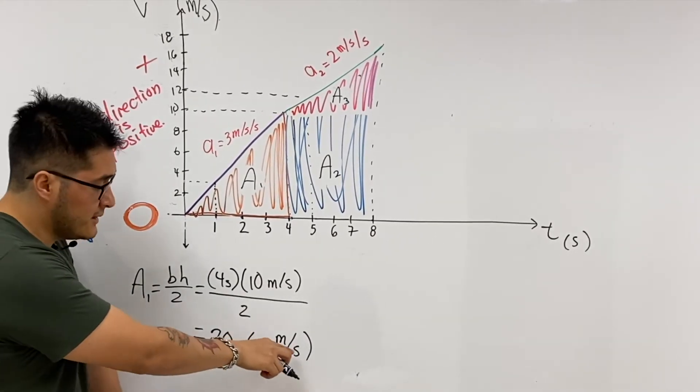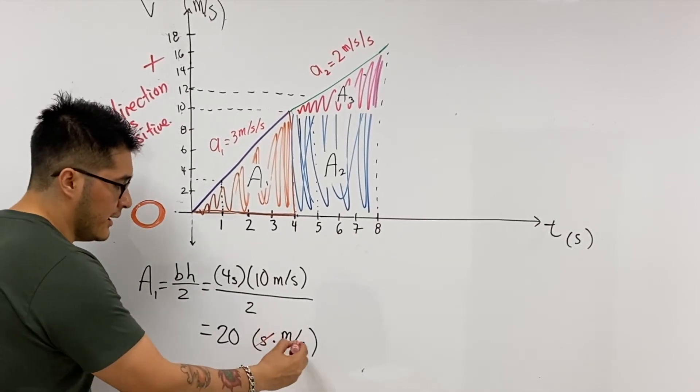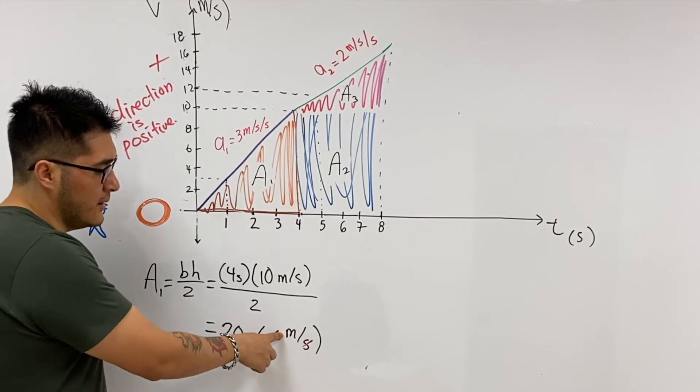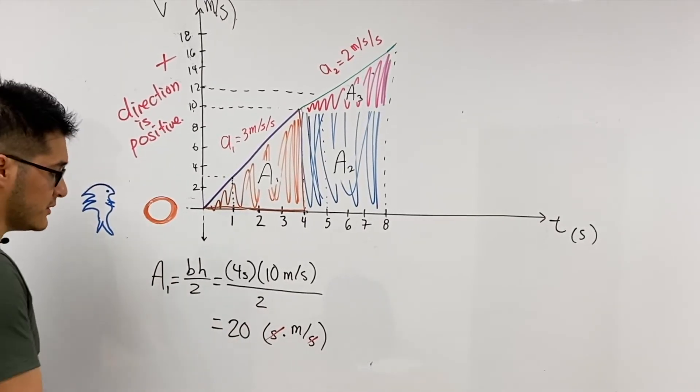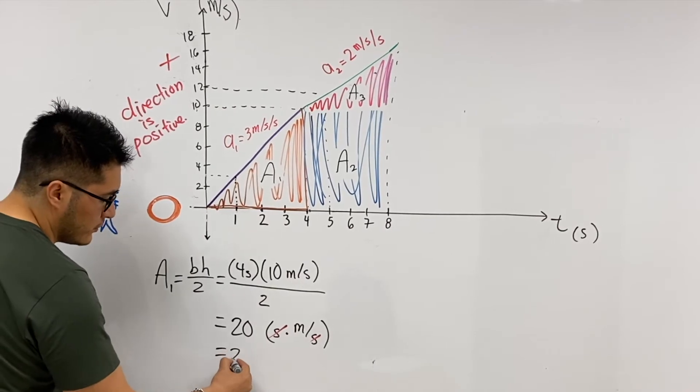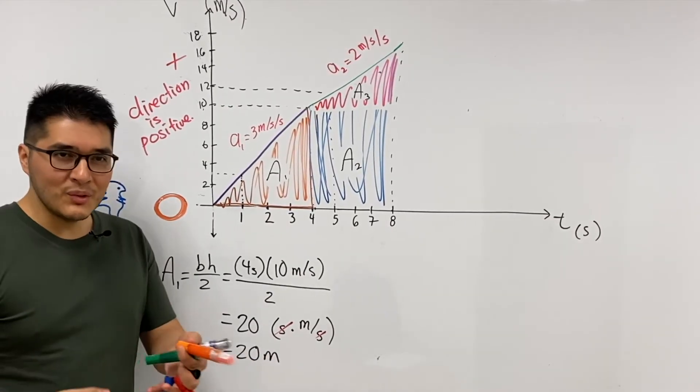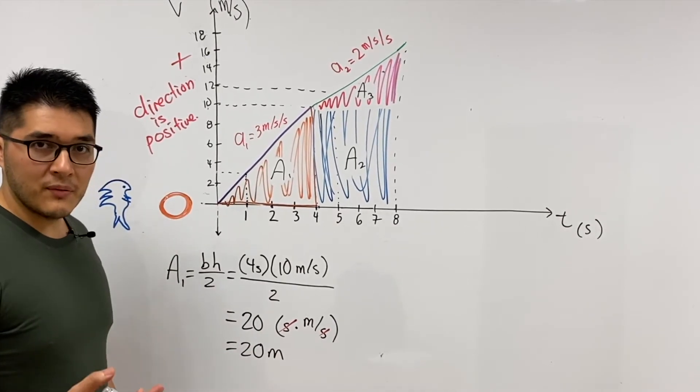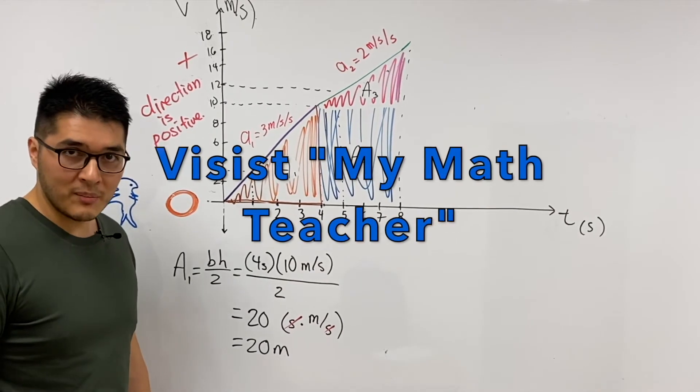And the units were seconds times meters per second. Now notice here the second is in the numerator and seconds is in the denominator. We can cancel those two out, which gives us units left over of just meters, which is how we calculate distance traveled. So 20 meters.